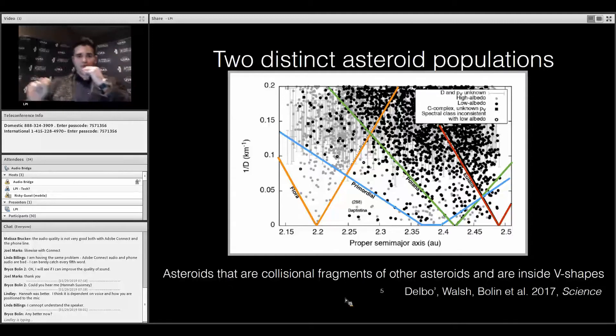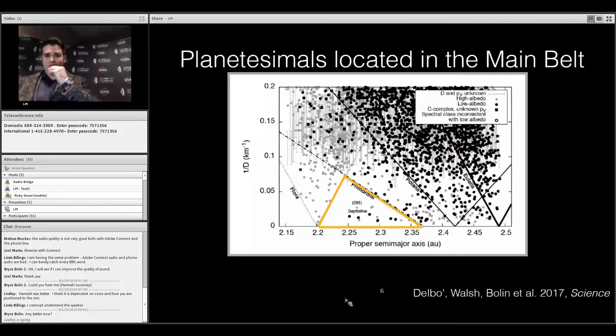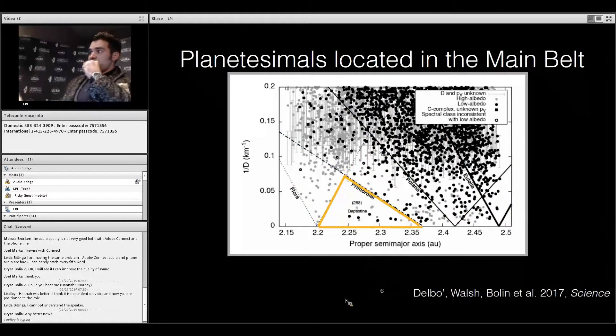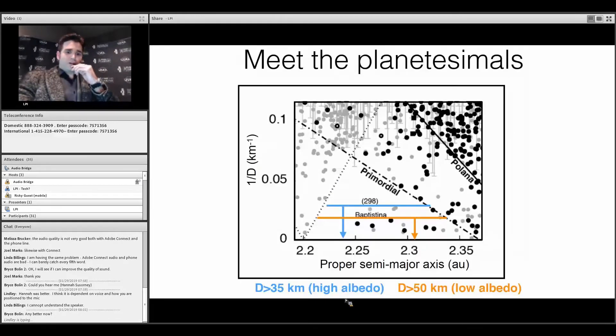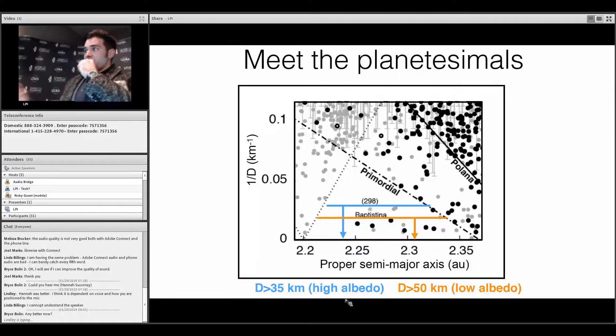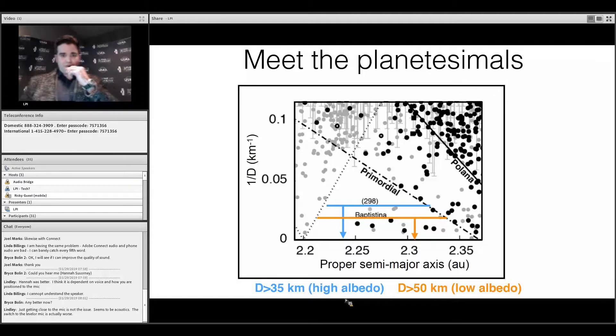However, you may notice that there is this primordial family located between 2.2 and 2.35 AU. When we examine this, we see that there are no asteroids smaller than 3.35 kilometers for the high albedo asteroids, and no asteroids smaller than 50 kilometers for the low albedo asteroids. This is very curious.